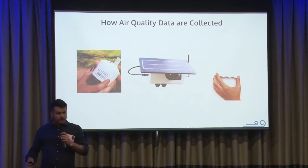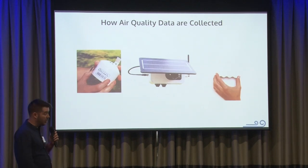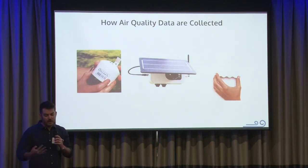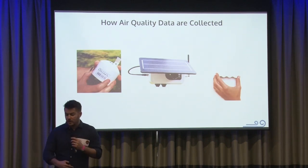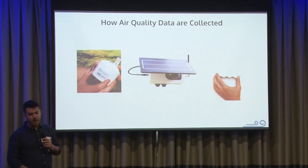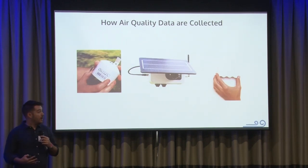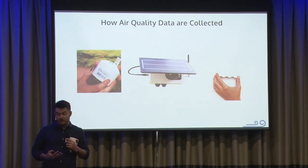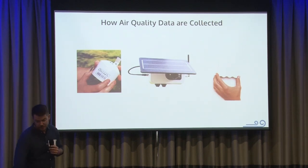A kind of new device on the scene is what can be called low-cost sensors, or we call them air sensors. This is kind of a consumer grade product — you can see they're much smaller. The one on the left is a very popular brand called Purple Air. The middle one is a brand called Clarity that has an integral solar panel. And then one called Habitat Map. These are consumer products — you or I could buy them. They range in price from $50 to anything under $2,000.